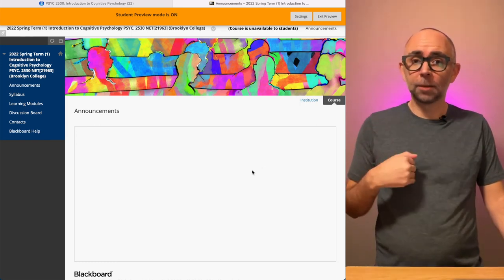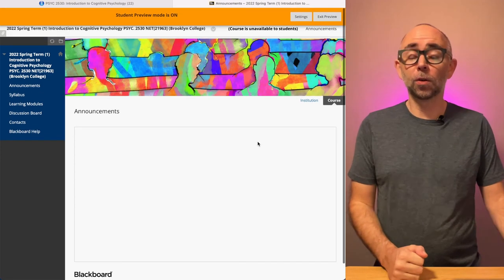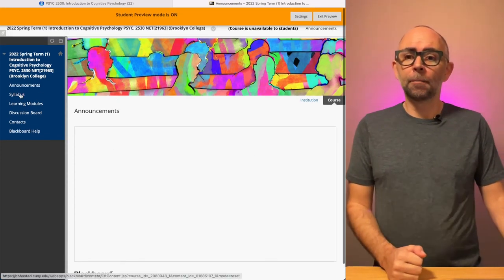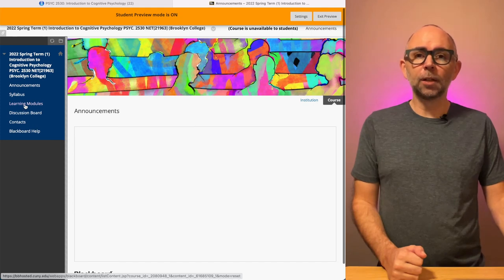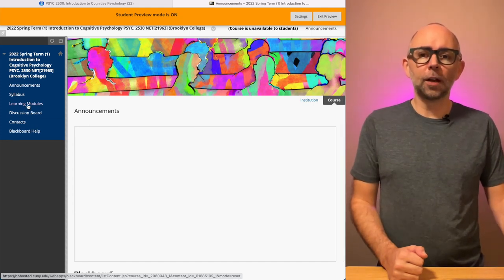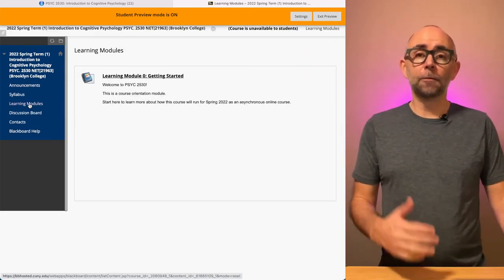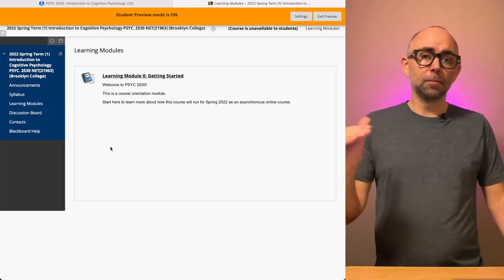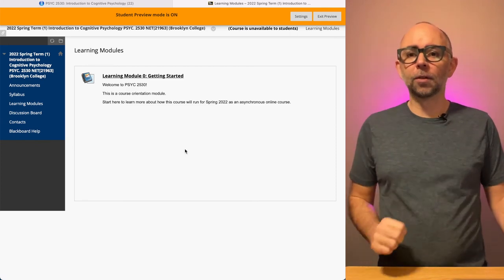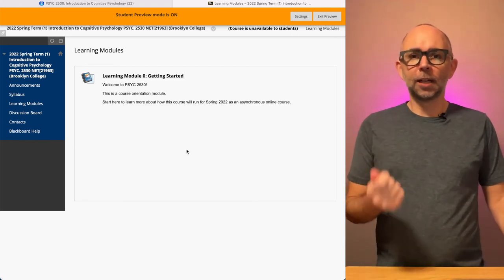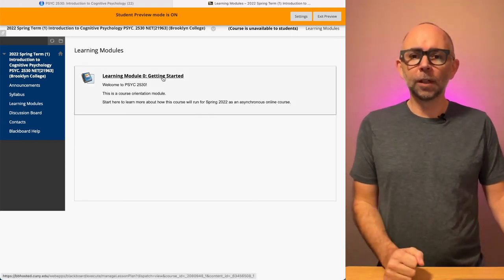This is still a work in progress as I'm recording this video, so there are no course announcements yet. But if you head over to the left side and you can see Learning Modules, you can click on Learning Modules and this is where you're going to find the different learning modules for this semester. So right now there's only one up here, Learning Module Zero, Getting Started. If you click on this module,